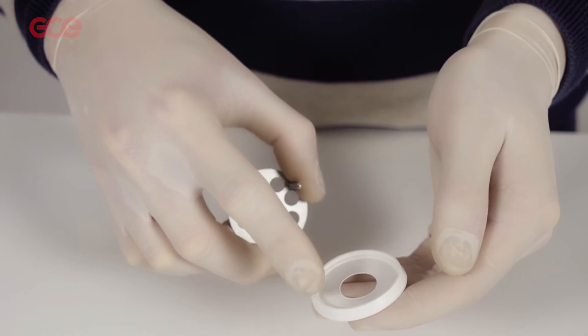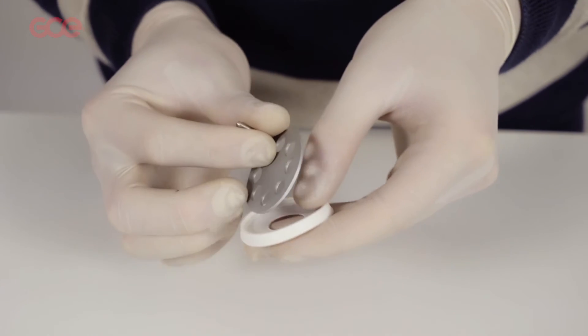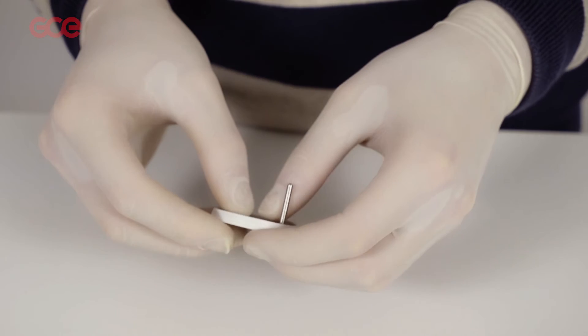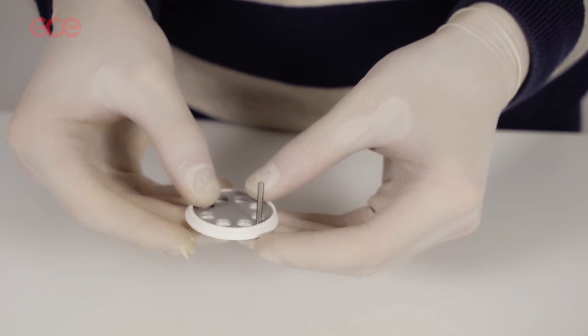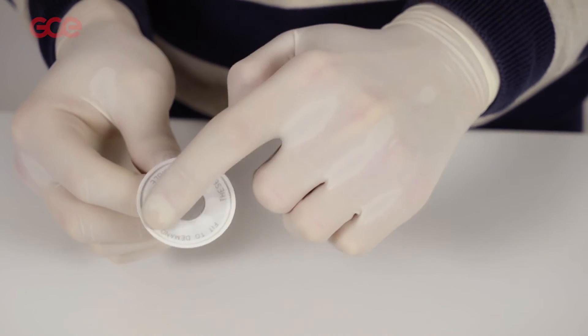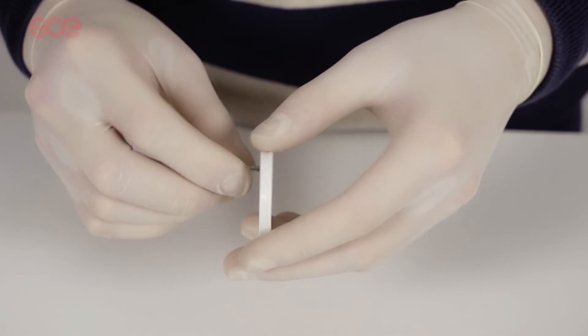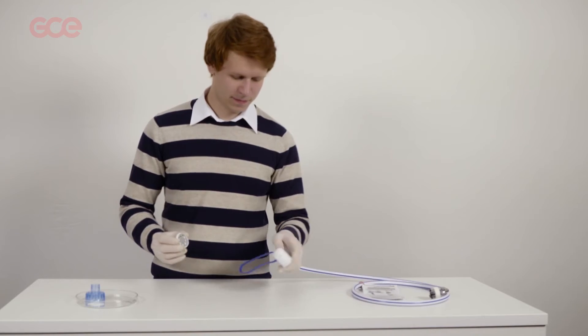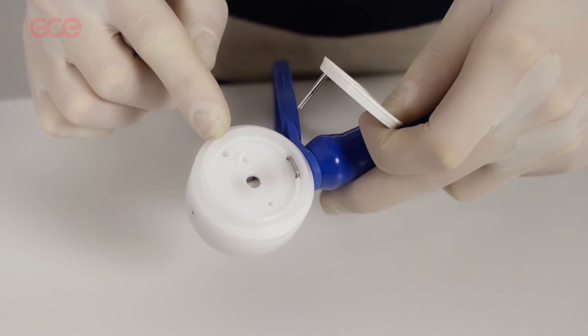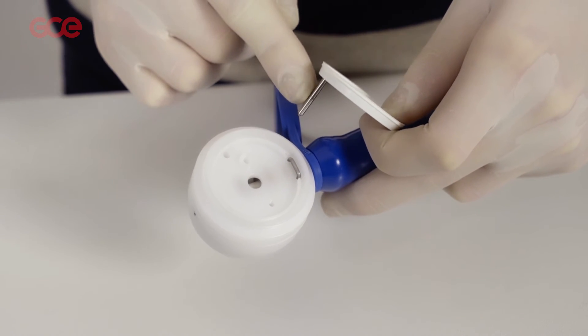Place the inhale flap back on the inhale disc. Make sure the rim is placed over the inhale disc and the letters facing up. Place the inhale disc assembly into the demand valve.